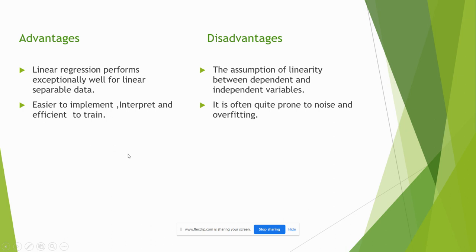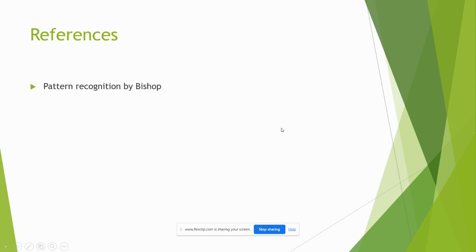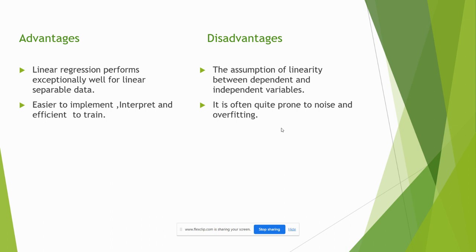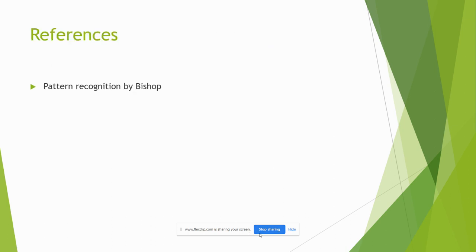Advantages and disadvantages. Advantages, linear regression performs exceptionally well for linear separable data. Disadvantages, the assumption of linearity between dependent and independent variables. It is easier to implement and is prone to noise and overfitting. Thank you.